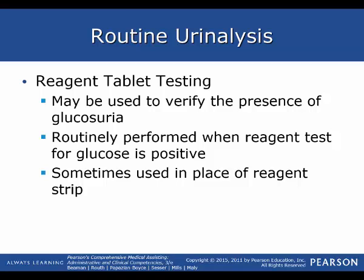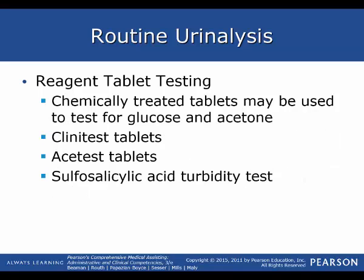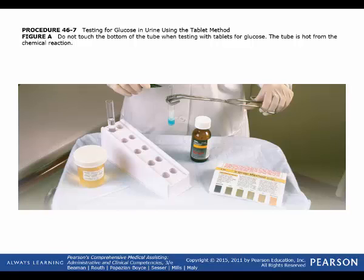Another method of testing urine, other than reagent strips, is reagent tablet testing. This may be used to verify the presence of glycosuria and is routinely performed when a reagent test for glucose is positive, or sometimes used in place of a reagent strip. Chemically treated tablets may be used to test for glucose and acetone; Clinitest tablets, Acetest tablets, and sulfosalicylic acid turbidity tests may also be used. Do not touch the bottom of the tube when testing tablets for glucose, because the tube becomes very hot from the chemical reaction.